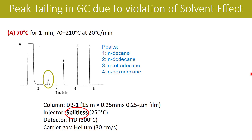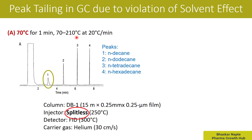Now this is the example we are going to talk about — you will find four different peaks. The column used is DB-1 and the injector mode is splitless, which is very important. The initial column temperature is 70 degrees Celsius for one minute, followed by a ramp of 20 degrees Celsius per minute until it achieves 210 degrees Celsius.